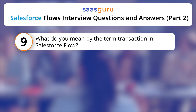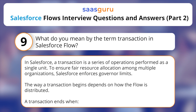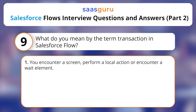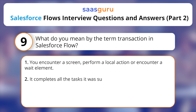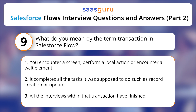What do you mean by the term transaction in Salesforce flow? In Salesforce, a transaction is a series of operations performed as a single unit. To ensure fair resource allocation among multiple organizations, Salesforce enforces governor limits. The way a transaction begins depends on how the flow is distributed. A transaction ends when you encounter a screen, perform a local action, or encounter a wait element. It completes all the tasks it was supposed to do, such as record creation or update, once all the interviews within that transaction have finished.